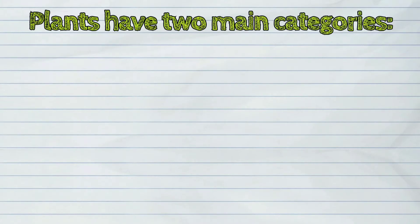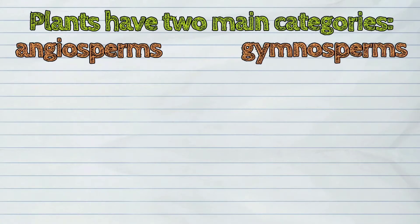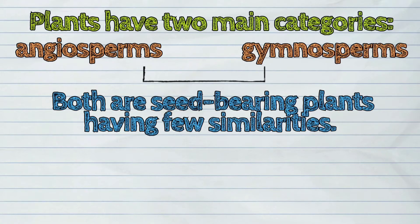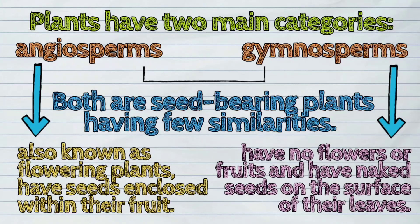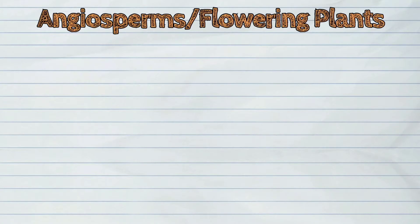Plants have two main categories: the angiosperms and gymnosperms. Both are seed-bearing plants having few similarities. Angiosperms, also known as flowering plants, have seeds enclosed within their fruit. Whereas gymnosperms have no flowers or fruits and have naked seeds on the surface of their leaves. Today, we will discuss further what flowering plants are.